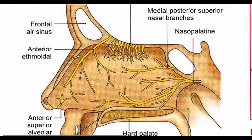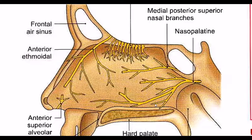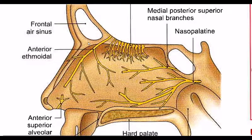For lymphatic drainage, the nasal septum drains into the retropharyngeal and deep cervical lymph nodes. Clinically, Little's area is important because it is a common site of bleeding (epistaxis). The nasal septum is also relevant in very common conditions such as the common cold, allergic rhinitis, and sinusitis.